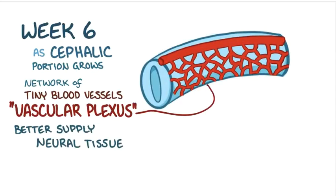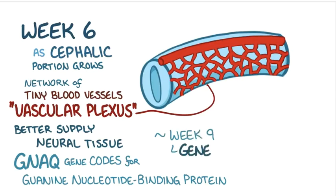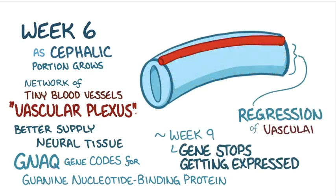There's a gene called the GNAQ gene, which codes for a guanine nucleotide binding protein, and that protein is involved in the development of the vascular plexus. Normally around week 9 of development, the GNAQ gene stops getting expressed, and that leads to regression of the vascular plexus.